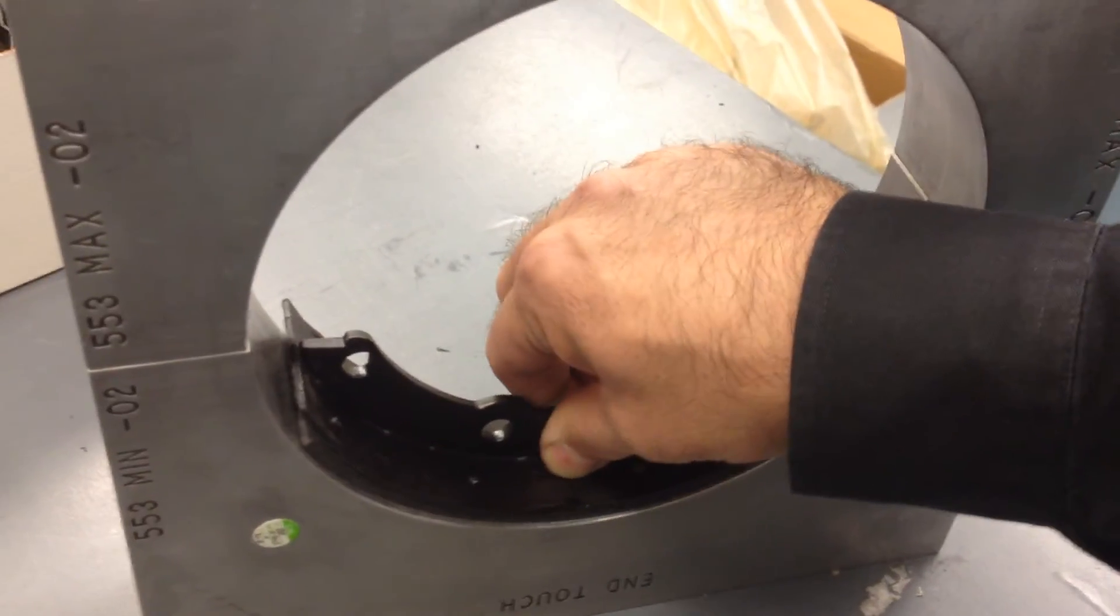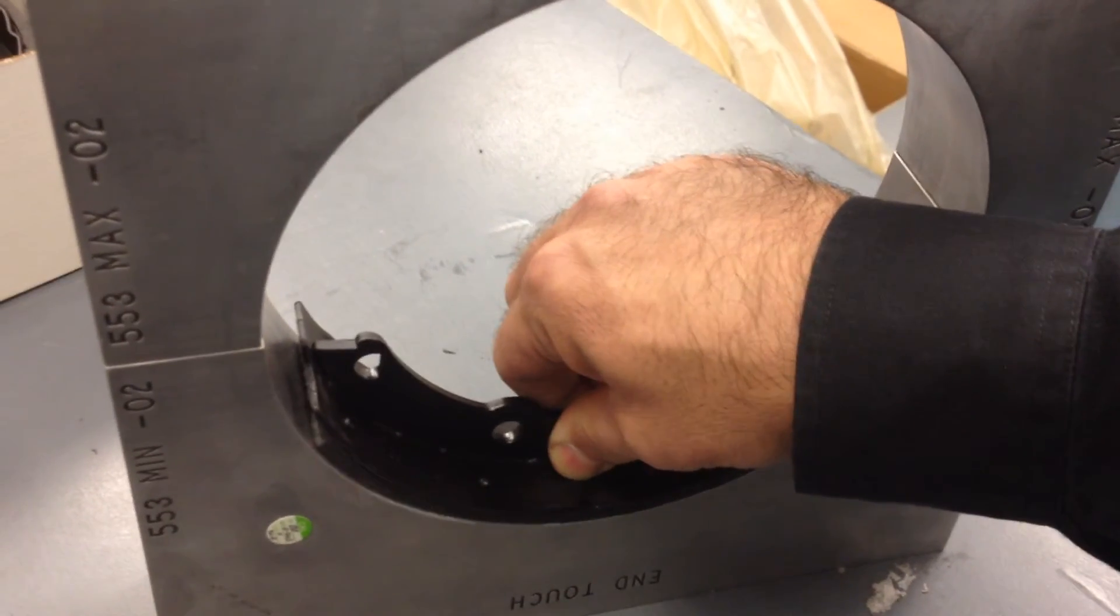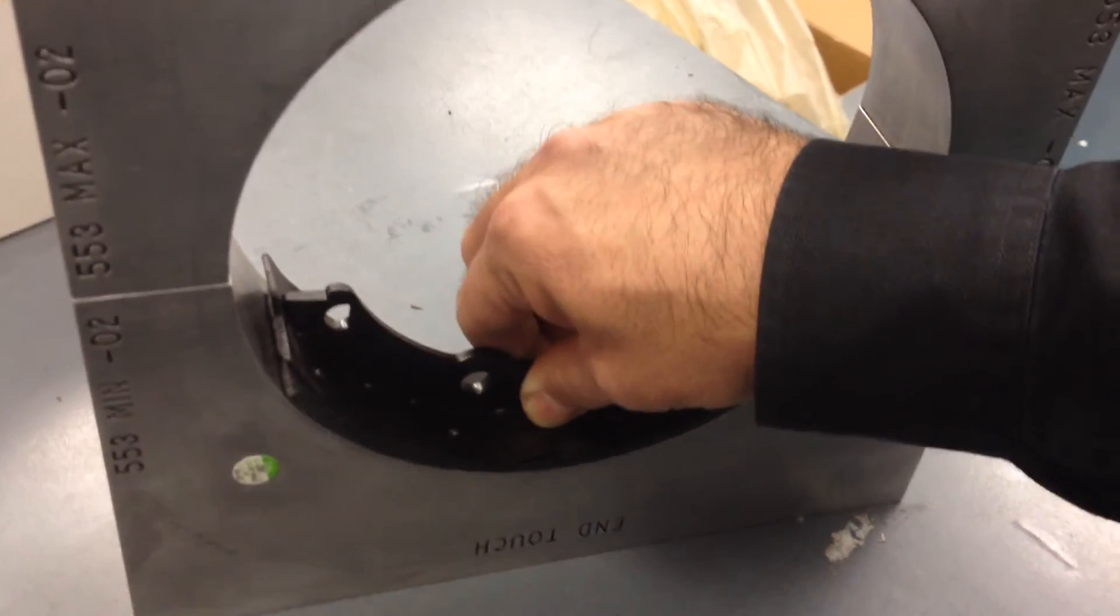Let me get up here so you can see what's happening. See how that's twisting back and forth? That's because the ends are not touching, and it's not holding it secure in the gauge.